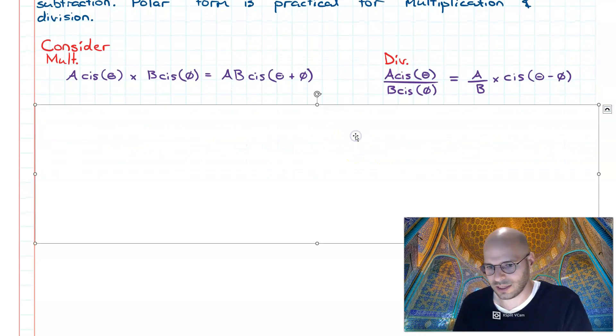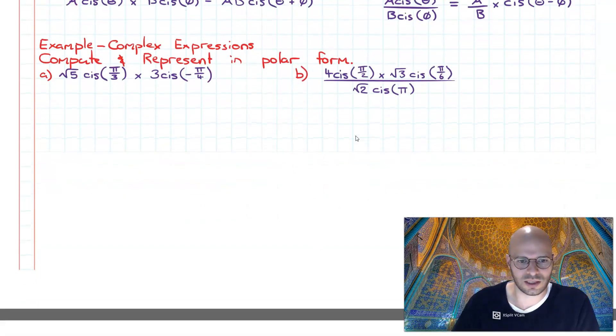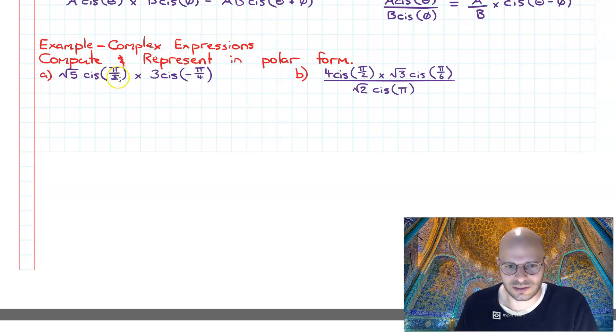So this makes multiplication way easier with complex numbers when we're in polar form. Now let's have a look at the application of this. Suppose we have two examples here, two expressions, and what we want to do is simplify these. For a, we have root five cis pi over three times three cis negative pi over four. Let us compute these and represent the final answer in polar form.